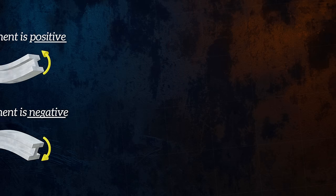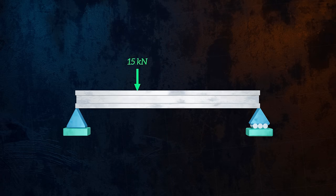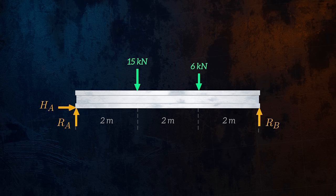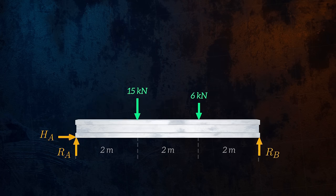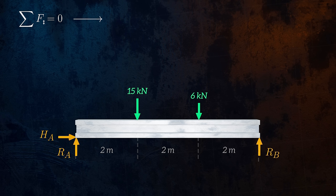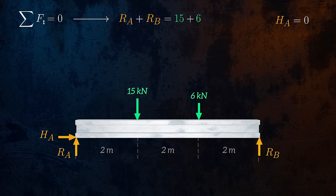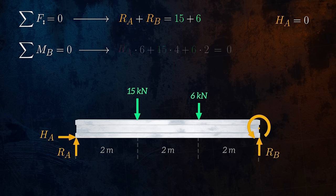Let's take a look at an example of a beam with pinned and roller supports, loaded by two concentrated forces. First, we draw the free body diagram. We can then use the equilibrium equations to determine the unknown reaction forces at point A and point B. The sum of the forces in the vertical direction is equal to zero, so Ra plus Rb is equal to 15 plus 6. Because Ha is the only horizontal force, it must be equal to zero. Taking the sum of the moments about point B gives us an equation which we can solve to determine that Ra is equal to 12. By substituting Ra into the previous equation, we can deduce that Rb is equal to 9.